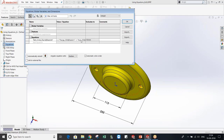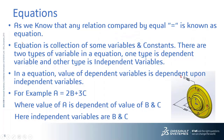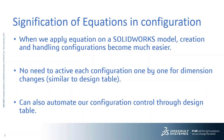I have also given another example of equations. I created a bolt circle sketch and in the equation I gave: 'flange OD sketch equals flange OD sketch plus hub OD sketch,' meaning the lengths of the flange and hub get added together and display in the results. An equation is created by giving an equal sign and is a collection of variables and constants. There are two types of variables: dependent and independent. For example, A equals 2B plus 3C — here A is the dependent variable and B and C are independent variables.